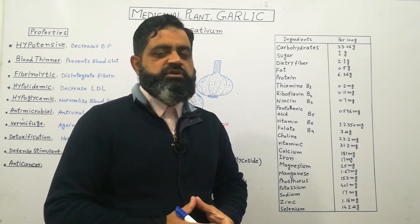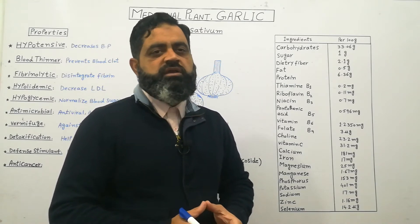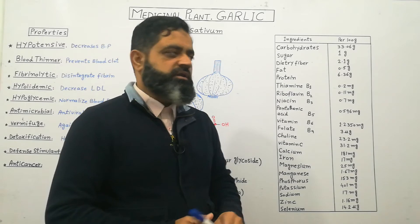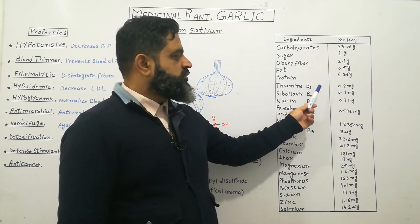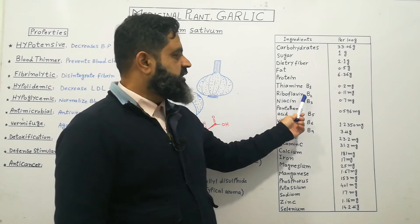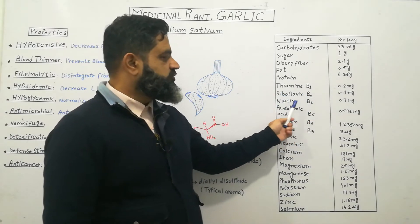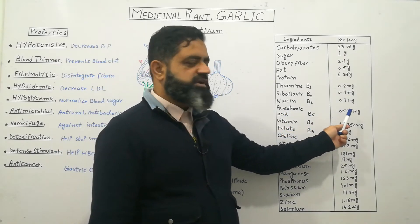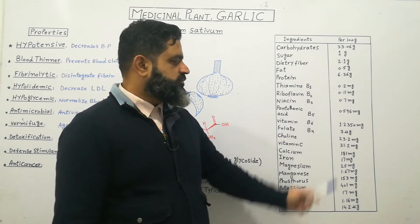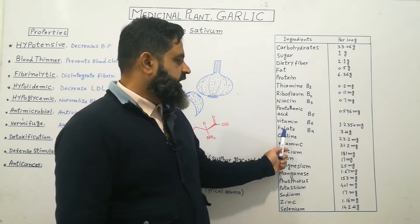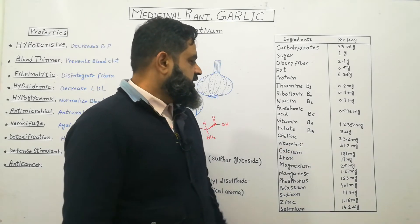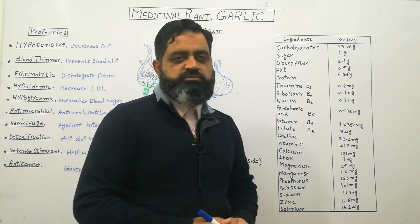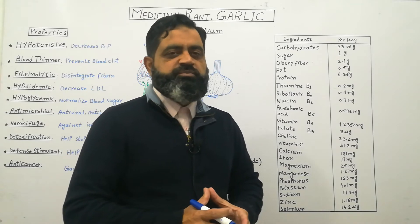Usually we do not get much nutrition because we are using garlic in a very minute amount, but there are many vitamins also present inside the garlic. Thiamine B1: 0.2mg, Riboflavin vitamin B2: 0.11mg, Niacin vitamin B3: 0.7mg, Pantothenic acid vitamin B5: 0.596mg, Vitamin B6: 1.235mg, Folate vitamin B9: 3 micrograms, Choline which is an amino acid: 23.2mg, and Vitamin C: 31.2mg. So most important vitamins are also present inside the garlic.